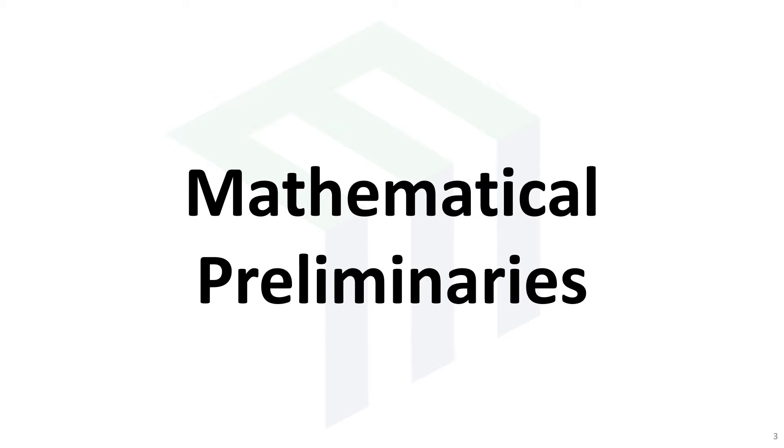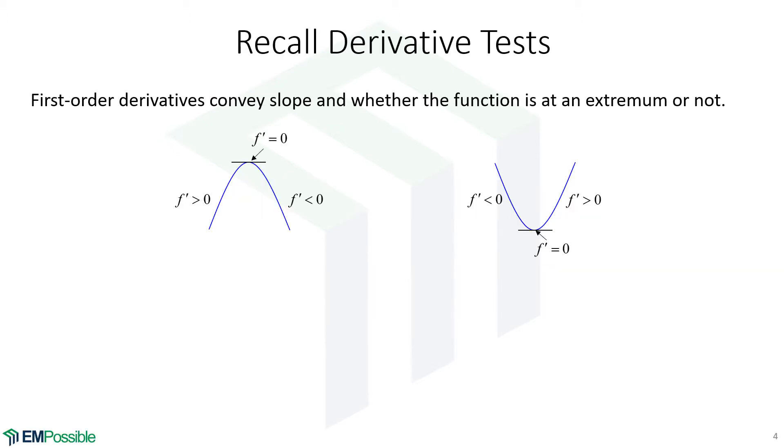Mathematical preliminaries. So we have the first derivative test. Let's say we have some function f of x. At its extremum, in this case the maximum, extremum is the generic term for minimum or maximum, but at the extremum the slope is zero. So by figuring out where the first derivative equals zero, we can locate a maximum. And likewise, if the function has a minimum, still at the minimum, at the extremum, the first derivative goes to zero.